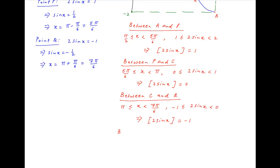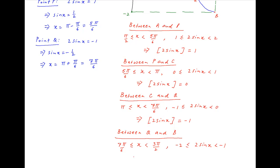And finally, between points q and b, where x lies between 7π/6 and 3π/2, it follows from the chart above that the value of 2 sin x will be greater than or equal to minus 2 and strictly less than minus 1, and it therefore follows that the integral part of 2 sin x in this range is equal to minus 2.